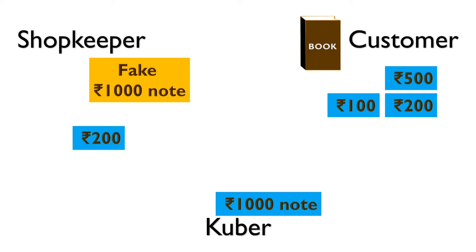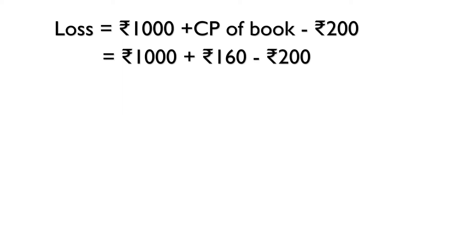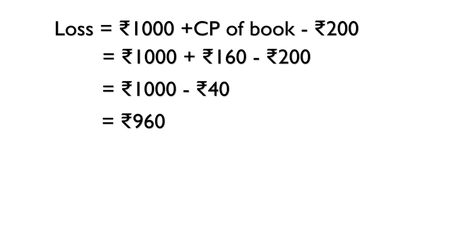Finally, the shopkeeper is left with real 200 rupees. So the loss will be the difference of initial and final money he has. Loss equals thousand rupees plus cost price of book minus 200, and that is equal to 960 rupees. That is our solution.